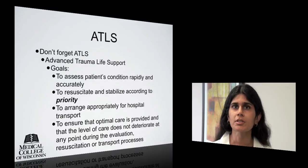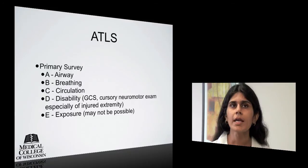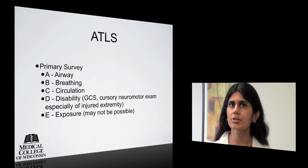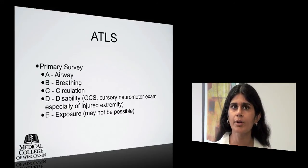In talking about field amputation, the principles of advanced trauma life support, or ATLS, are a priority. The goals of the ATLS system are several-fold: to assess the patient's condition rapidly and accurately; to resuscitate and stabilize according to priority; to arrange appropriately for hospital transport; and to ensure that optimal care is provided and that the level of care does not deteriorate at any point during the evaluation, resuscitation, or transport processes. ATLS consists of easily remembered priorities in a primary and secondary survey. In most situations, the secondary survey will be conducted in a hospital setting. The primary survey focuses on A, B, C, D, and E, which quickly assess and treat life-threatening conditions in the trauma patient.